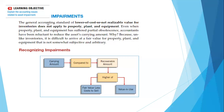Kita harus nilai ulang aset tetap kita, jangan-jangan nilainya itu turun. Jadi kita harus lihat kalau misalnya aset tetap kita itu posisinya adalah usang, maka si akuntan itu harus tanggap dan harus melakukan impairment. Karena tidak seperti inventories, it is difficult to arrive at a fair value for property, plant, and equipment that is not somewhat subjective and arbitrary. Kalau inventory mungkin lebih mudah dibandingkan dengan menghitung penurunan nilai dari aset tetap yang kita miliki.